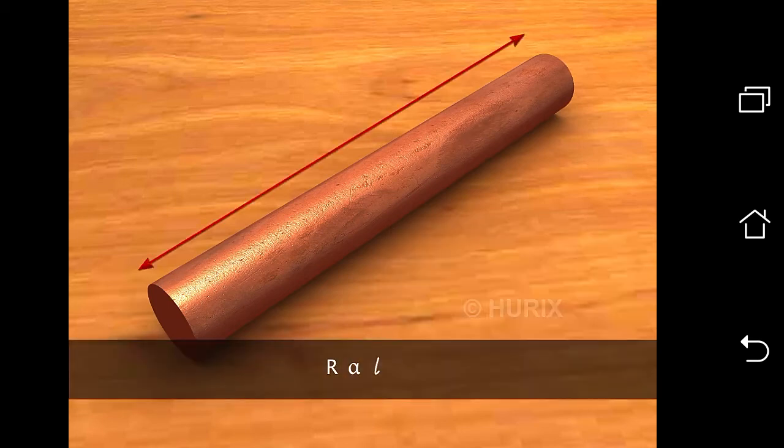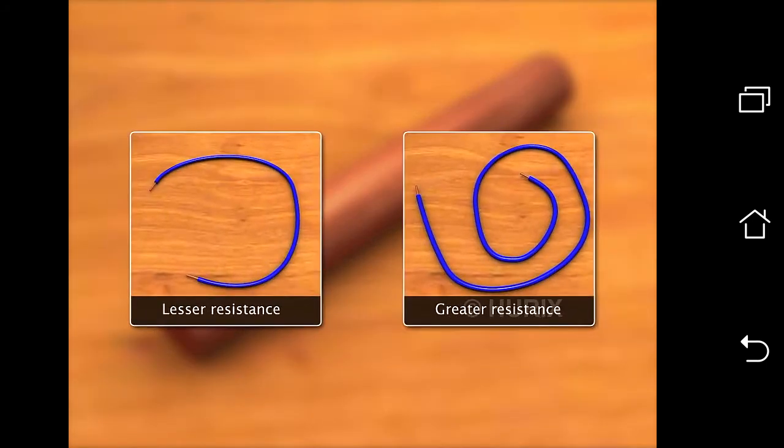Resistance R is directly proportional to length L of the conductor or wire. In other words, the longer the wire, its resistance is greater.